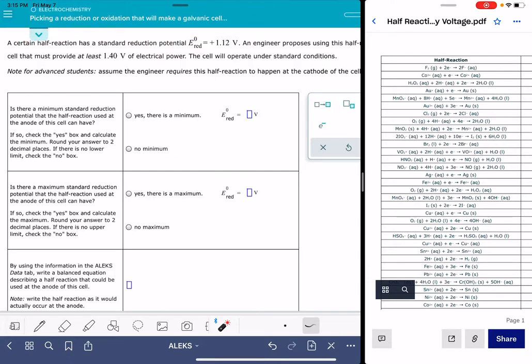This problem gives us two pieces of information. First, it gives us a goal for the overall E cell for this particular galvanic cell. For this problem, the cell must provide at least 1.4 volts of power. So my E cell value has to be equal to or greater than 1.4 volts.